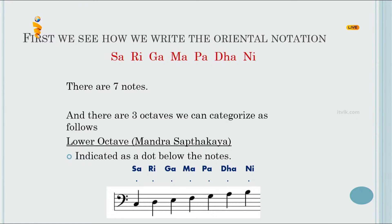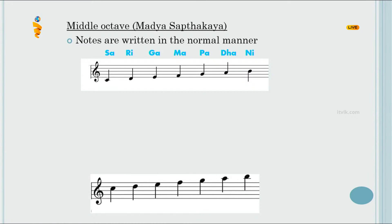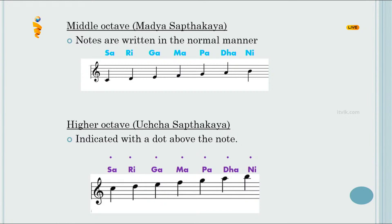The next one is the middle octave, Madhya Saptakaya. The notes are written in the normal manner. The third one is the higher octave, Uccha Saptakaya. It is indicated with a dot above the note.